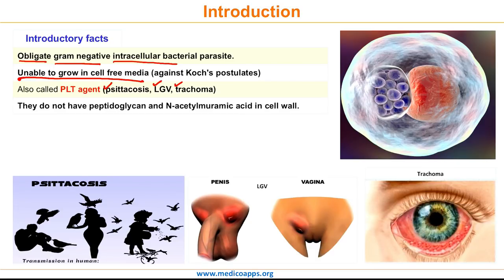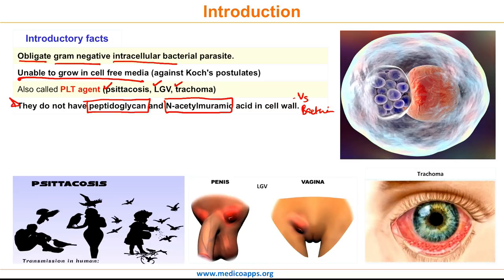Another very important feature is that Chlamydia does not have peptidoglycan or N-acetylmuramic acid in their cell wall. This absence of peptidoglycan and N-acetylmuramic acid in the cell wall differentiates Chlamydia from other bacteria. This is a frequently asked MCQ point in various PG exams.